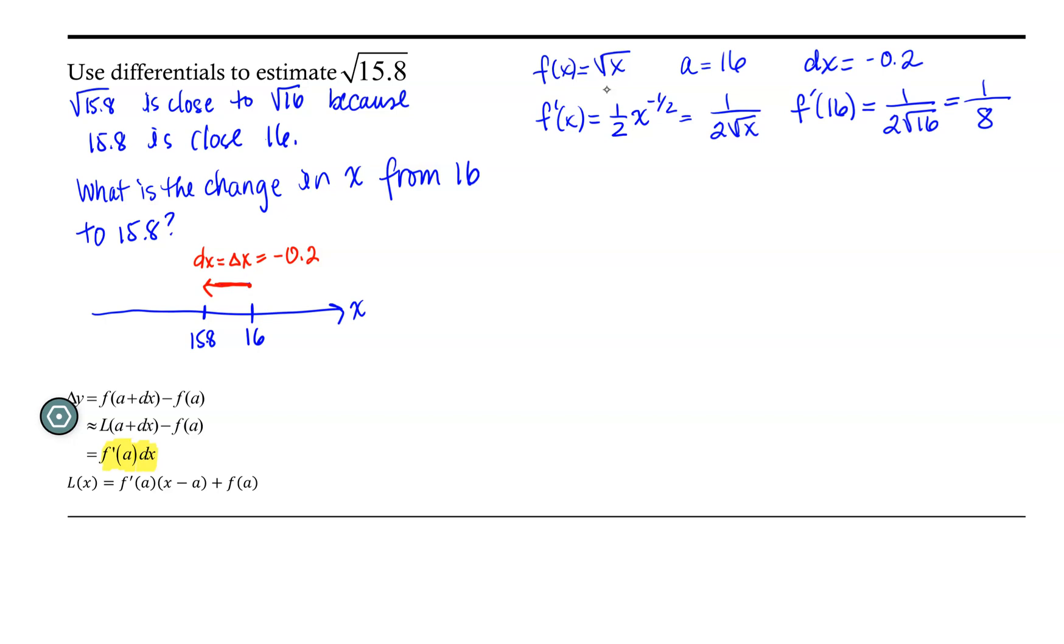Okay, so now we have everything that we need for our differential. So let's go ahead and start. So we've got the square root of 15.8. And we're saying that this is equal to the square root of 16 plus some small change in y. Because the argument, or the radicand 15.8 is close to 16, but they are not the same. So there will be some small change in y. Now, because we're dealing with numbers that are not perfect squares, then this delta y is not easily computed. So in place of delta y, we will use the differential dy. So the square root of 15.8 is approximately equal to the square root of 16 plus dy.